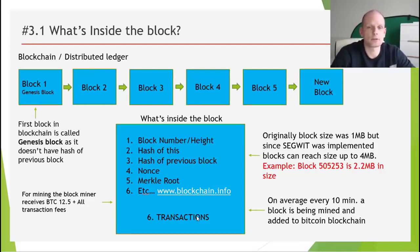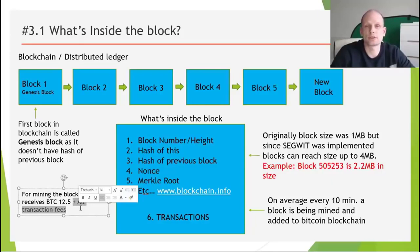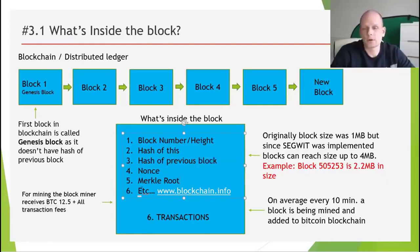On average every 10 minutes a block is mined and added to the Bitcoin blockchain. Miners receive a reward for mining one block — every 10 minutes when miners find or mine a block, they receive 12.5 Bitcoin for each block mined. They also receive all transaction fees for all transactions included in that particular block.